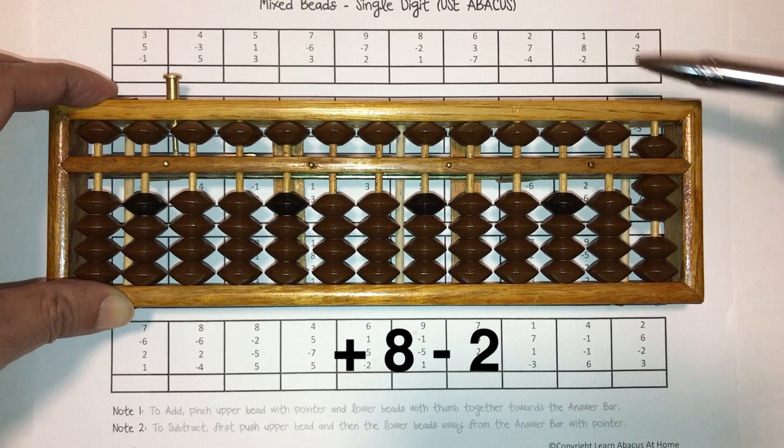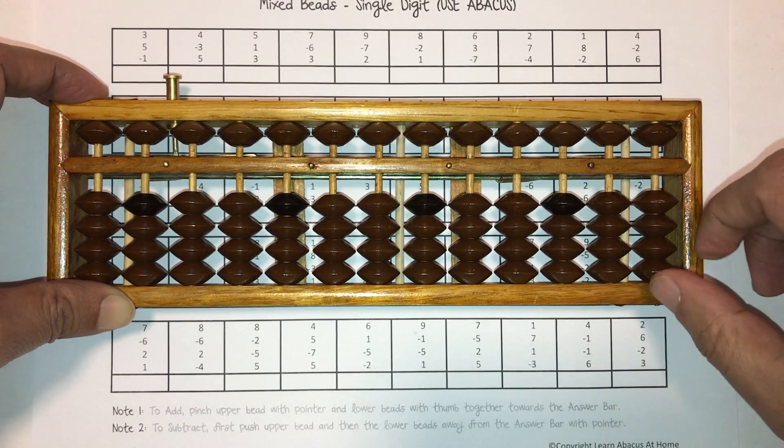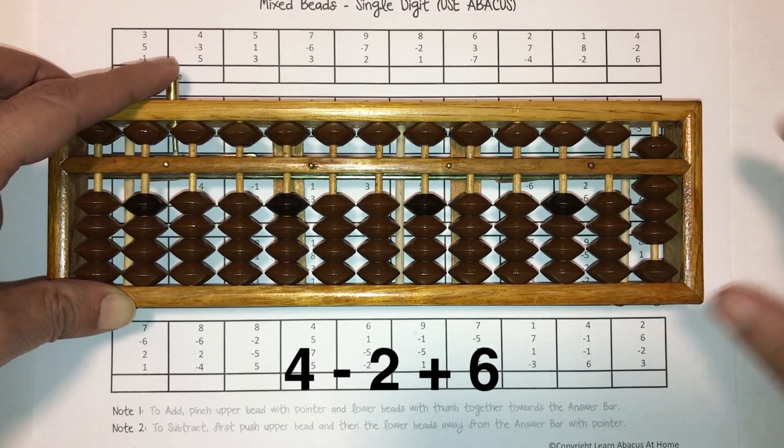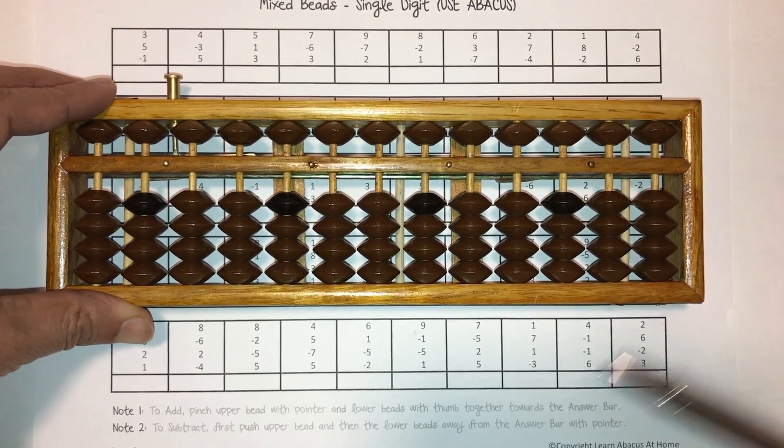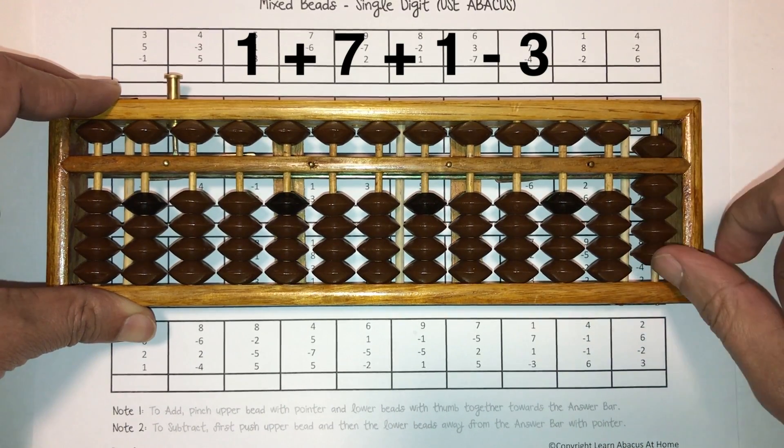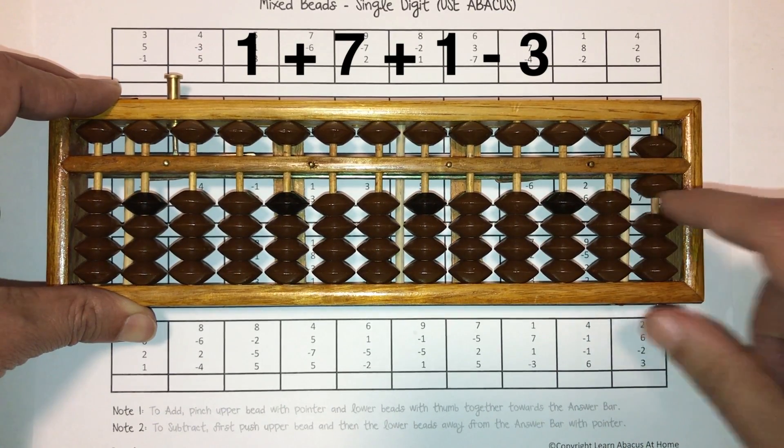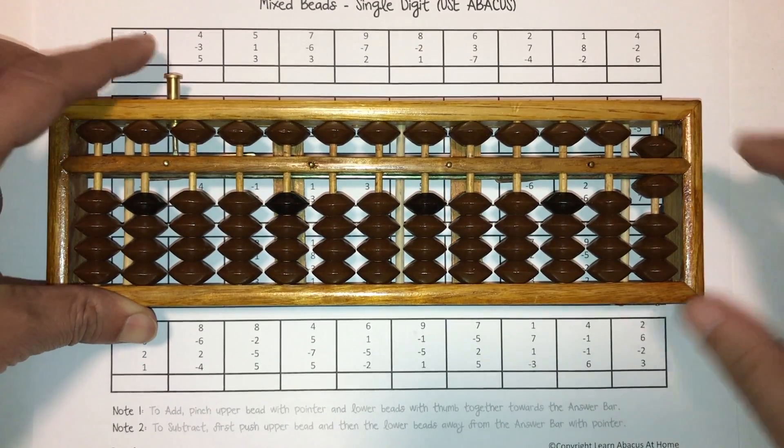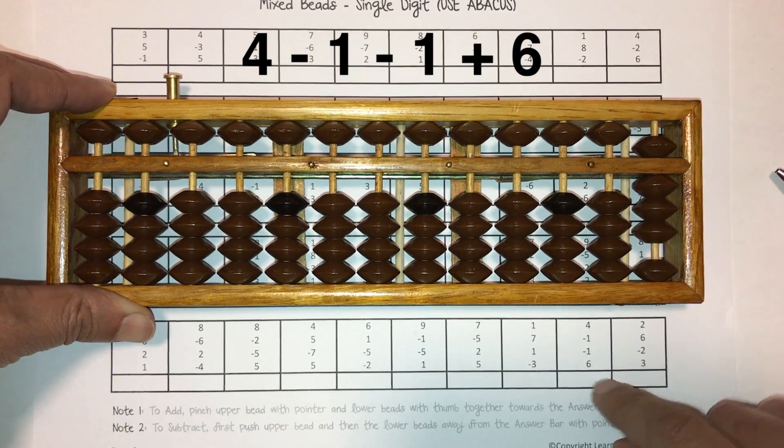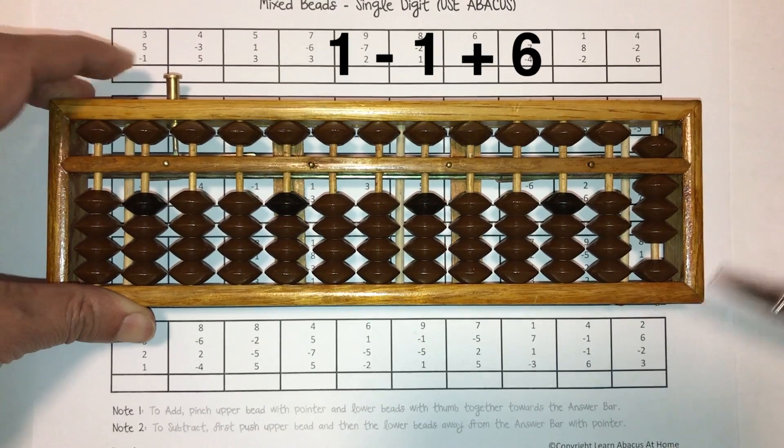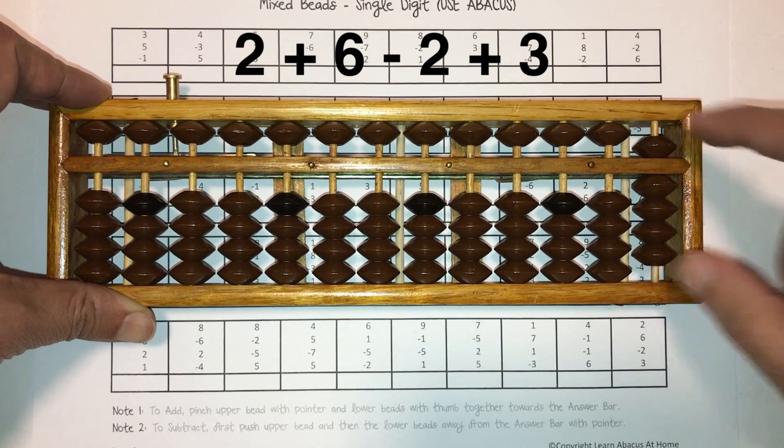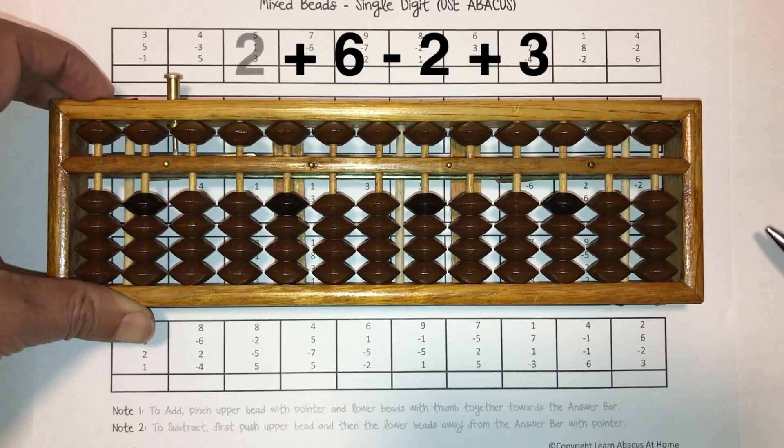All right, so now clear the abacus and let's work on the last three. One plus seven plus one minus three, that's a six right there. Four minus one minus one plus six, that gives us an eight. Five, six, seven, eight. It goes right there. Two plus six minus two plus three, answer is nine. Nine goes right there.